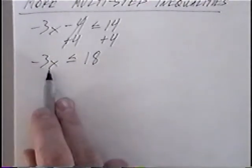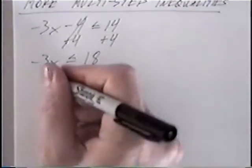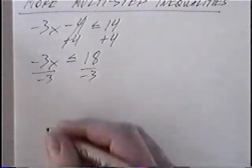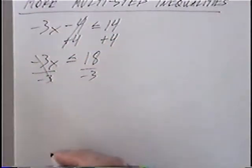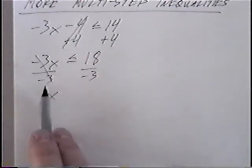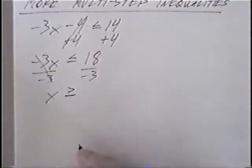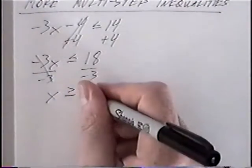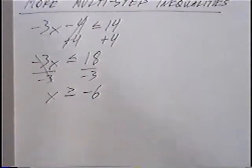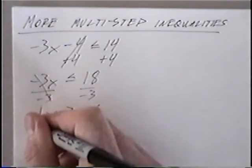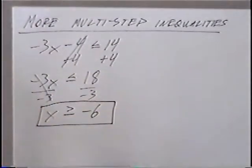The last step: we have negative 3 times x. To get rid of a negative 3 that we're multiplying, we can divide by negative 3. The negative 3s would cancel and x would come down. Remember, any time you divide by a negative number, the inequality would switch around. 18 divided by negative 3 would be negative 6. Since the instructions do not say to graph, we do not have to graph this inequality. The answer would be x is greater than or equal to negative 6.